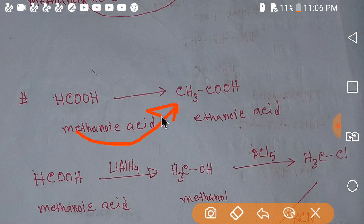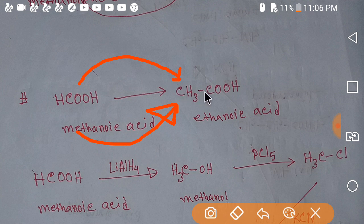Now it's time to make a plan. If you want to convert metanoic acid to ethanoic acid, then you have to increase one carbon in the chain. What is the rule to increase carbon in the chain? We have to think about the mother compound. The mother compound is alkyl halide.